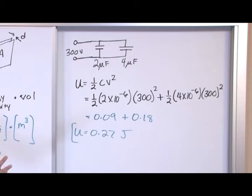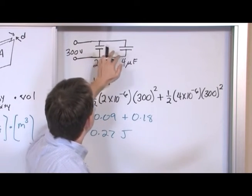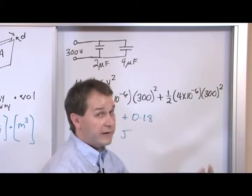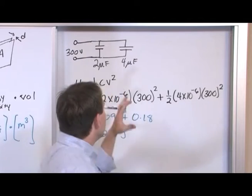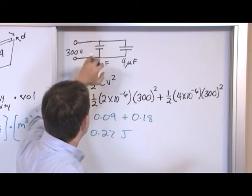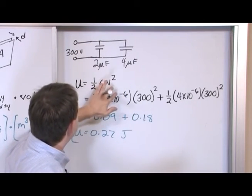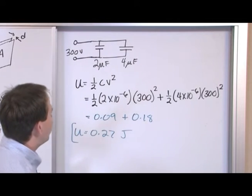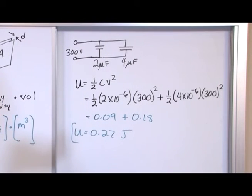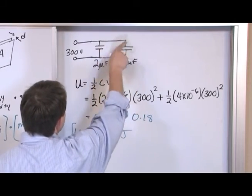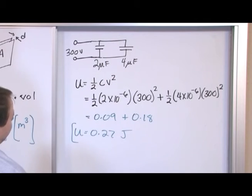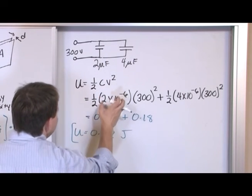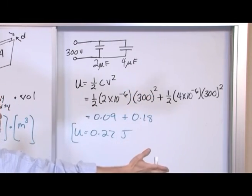Now there's more than one way to do a problem. If you wanted to do it differently you could combine these capacitors into an equivalent capacitance like we learned how to do a couple sections ago and then you could use that equivalent capacitor like one big capacitor there and then do 1/2 CV² using the equivalent capacitance. But you know I think you can see you're going to get the same answer because if we add these, because in capacitors in parallel we just add the values of the capacitance. So we would get six microfarads for that new capacitance. So we would have 1/2 × 6 microfarads × 300² and we would get the same thing.